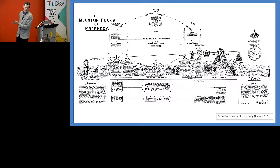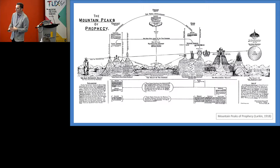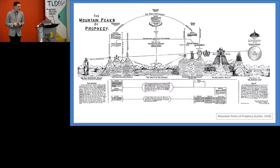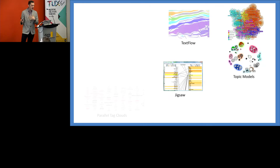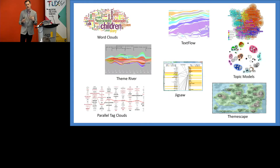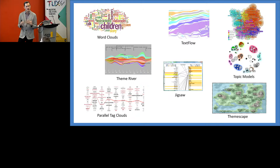The theme of research is looking at abstract visualizations of information from text and documents — not literal depictions like this beautiful 'Mountain Peaks of Prophecy' visualization of Bible texts. What we're looking at instead are more abstract visualizations that represent something about the text in order to help people achieve a particular task.